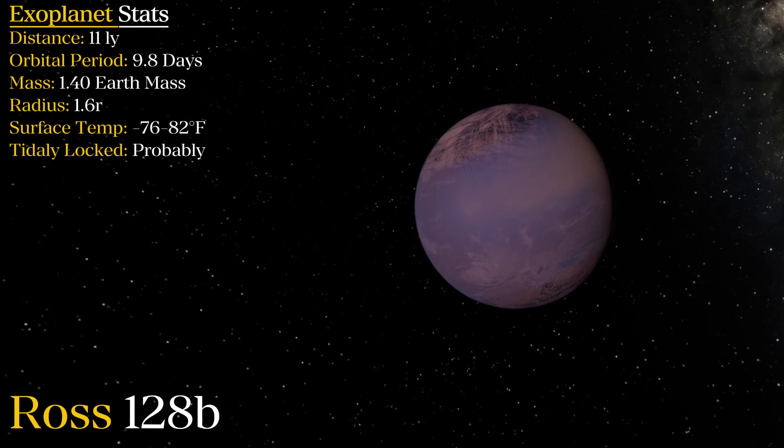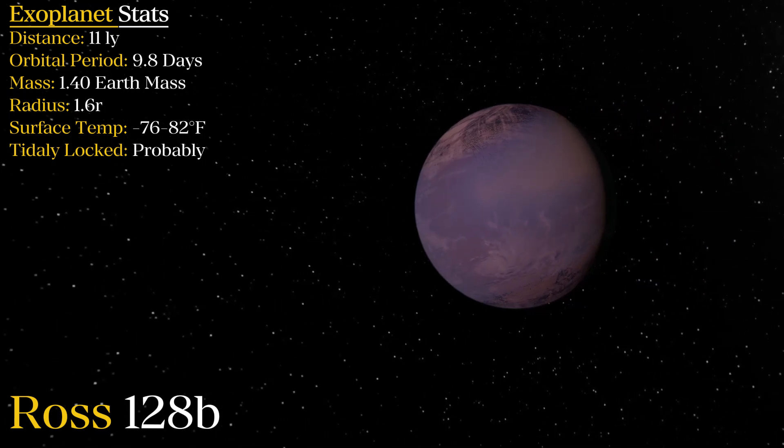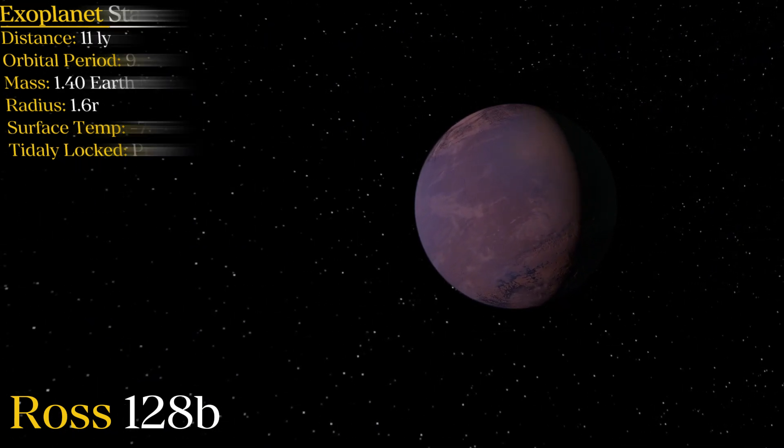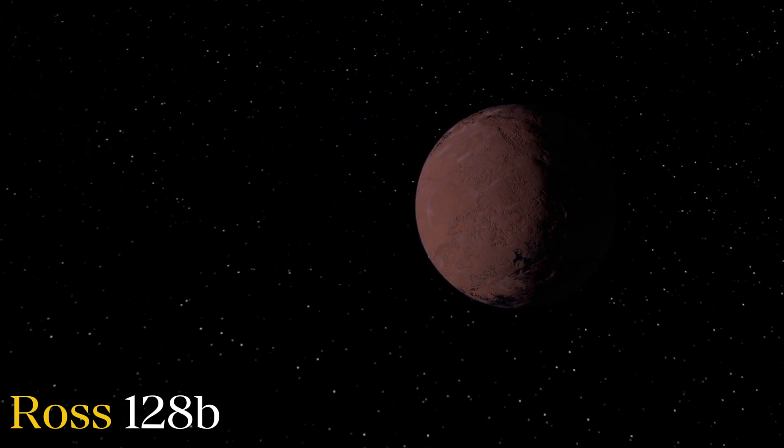The planet is only 35% more massive than Earth, receives 38% more starlight, and is expected to have a temperature stable for liquid water to exist on its surface. If it has an atmosphere. Big if.